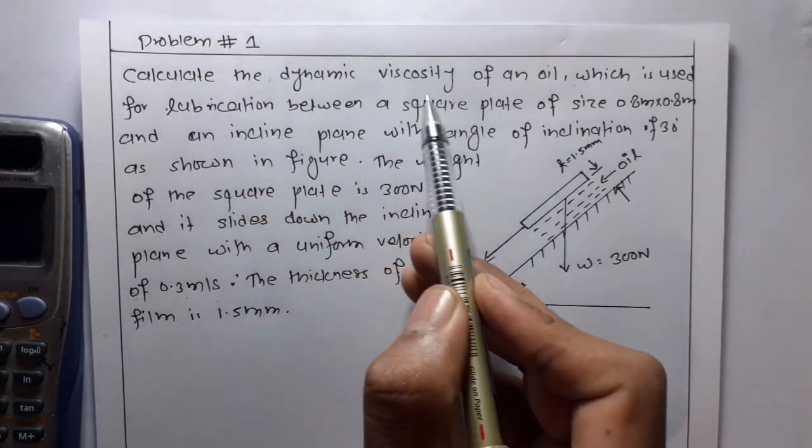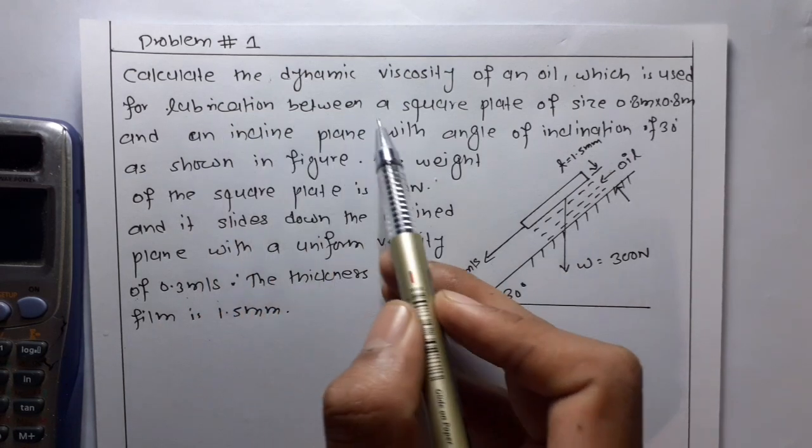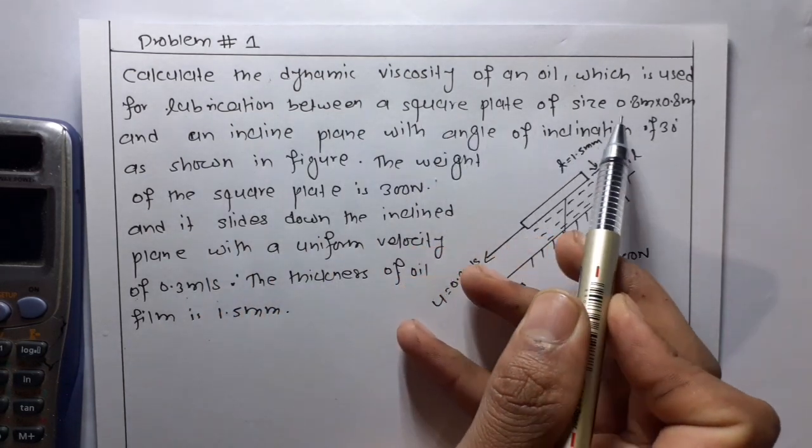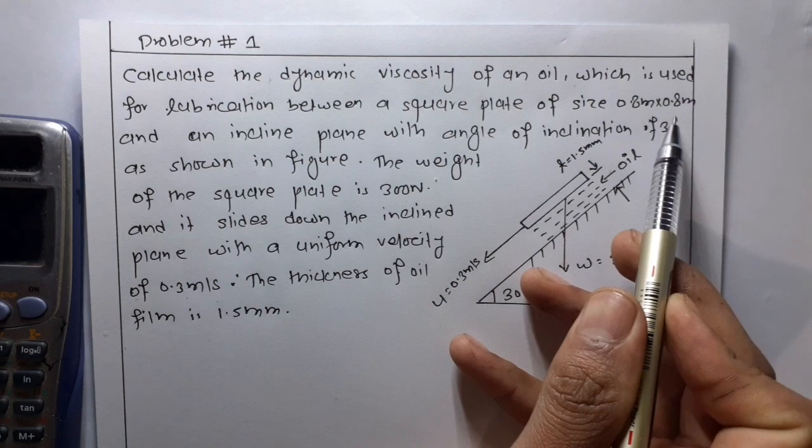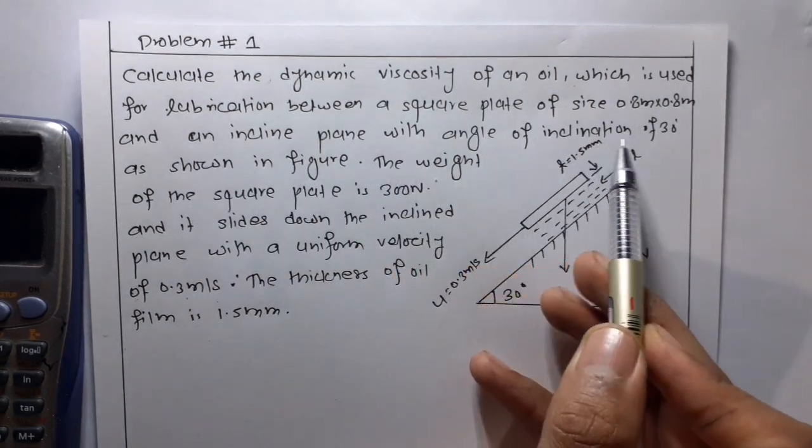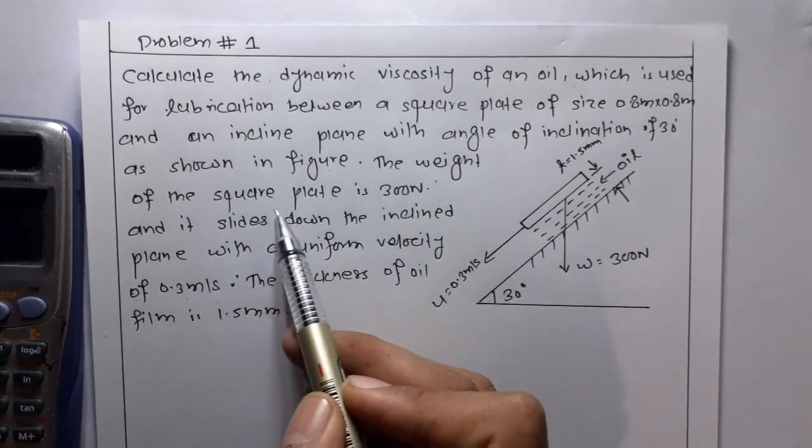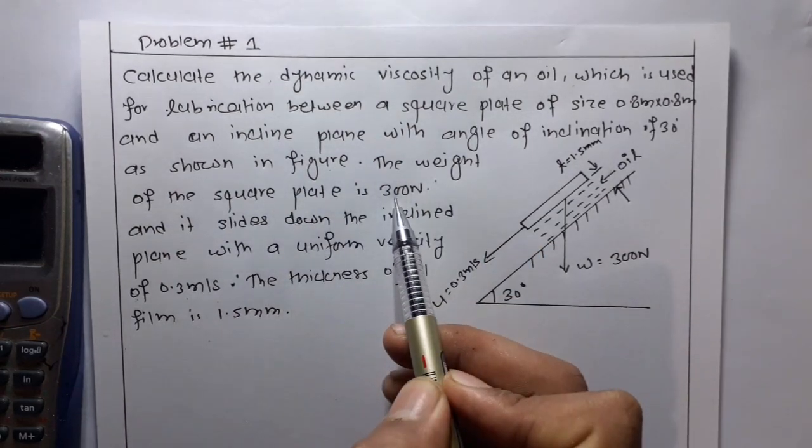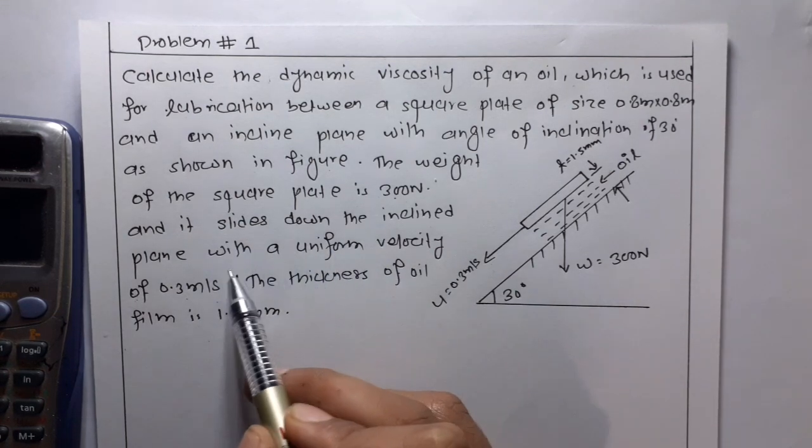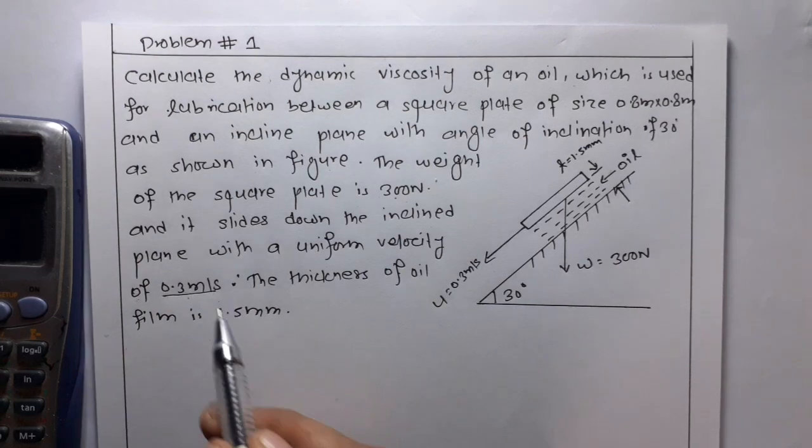Question is calculate the dynamic viscosity of an oil which is used for lubrication between a square plate of size 0.8 meter into 0.8 meter and an inclined plane with angle of inclination of 30 degrees as shown in figure. The weight of the square plate is 300 Newton and it slides down the inclined plane with a uniform velocity of 0.3 meter per second.